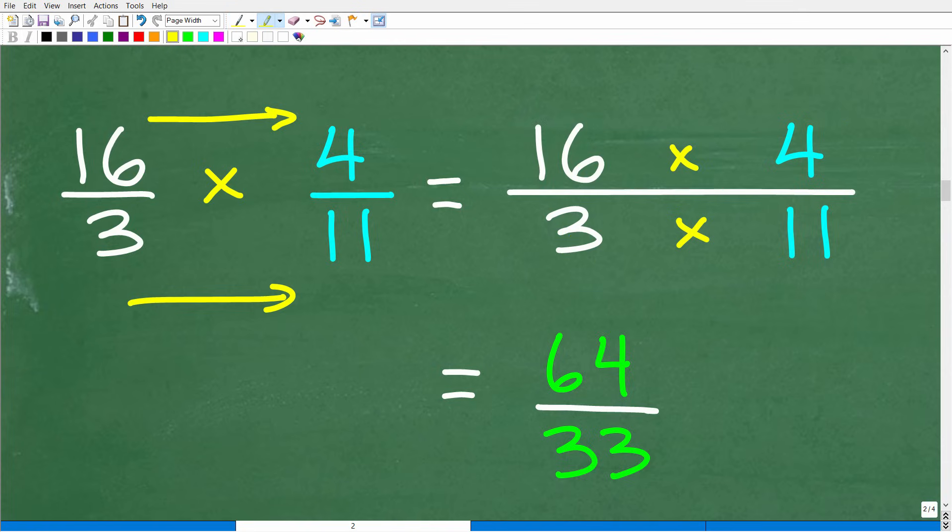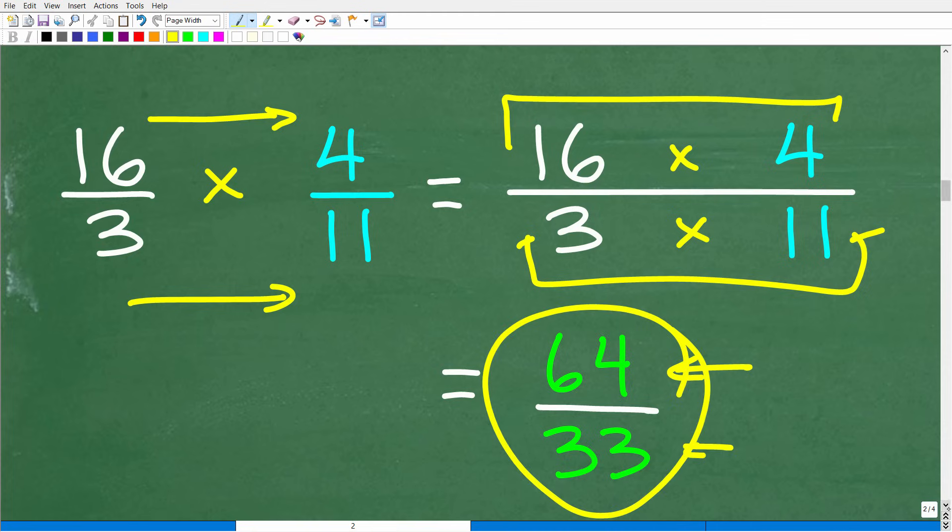So before you start multiplying, you want to scan these numbers and look for common factors. But, you know, 11 is prime. There's no 11 up here in the numerator. 3 is prime. I don't see anything that could be divisible by 3. 4 can't go into 11. 4 can't go into 3. So we pretty much have no opportunities to cross-cancel. So we're just going to go ahead and do the actual multiplication. So 16 times 4 is 64. And hopefully that's pretty easy for you to do. And 3 times 11 is 33. And there you go. There is the final answer.